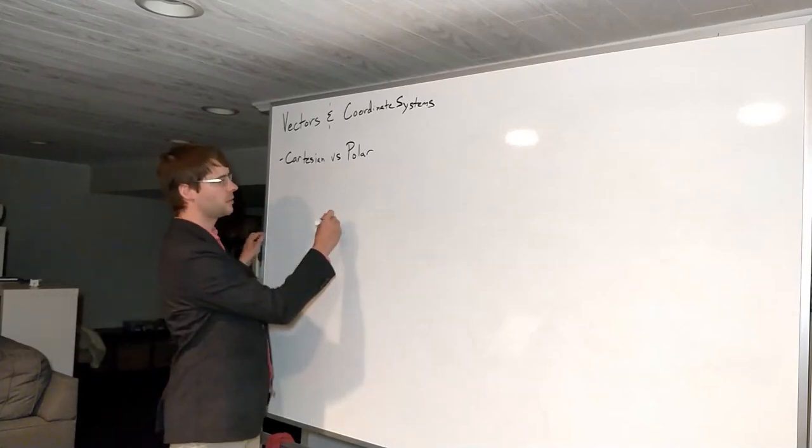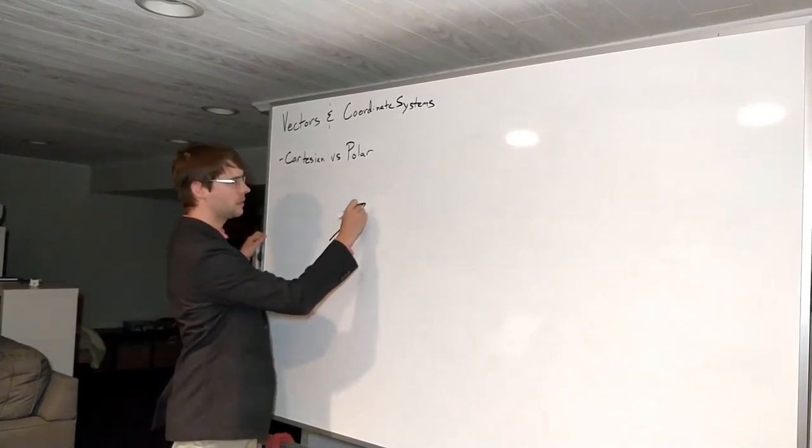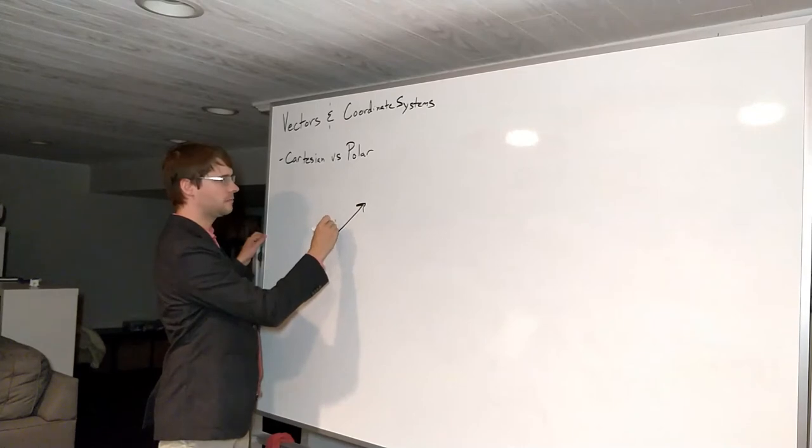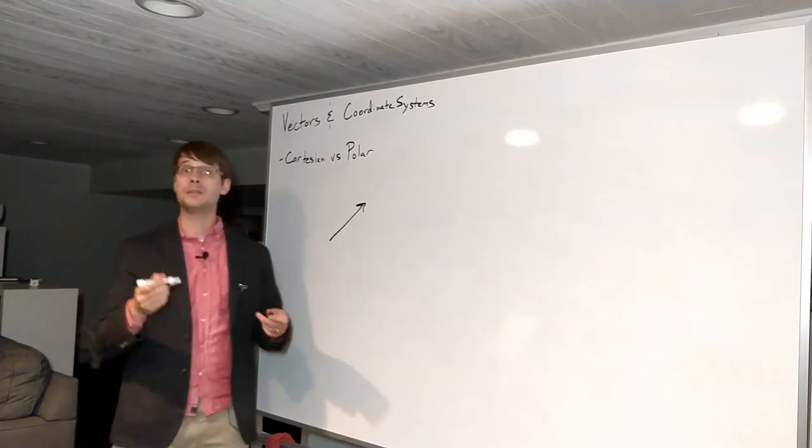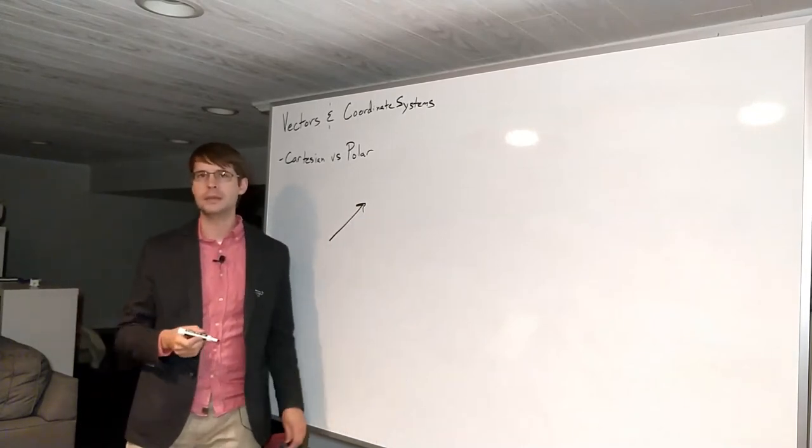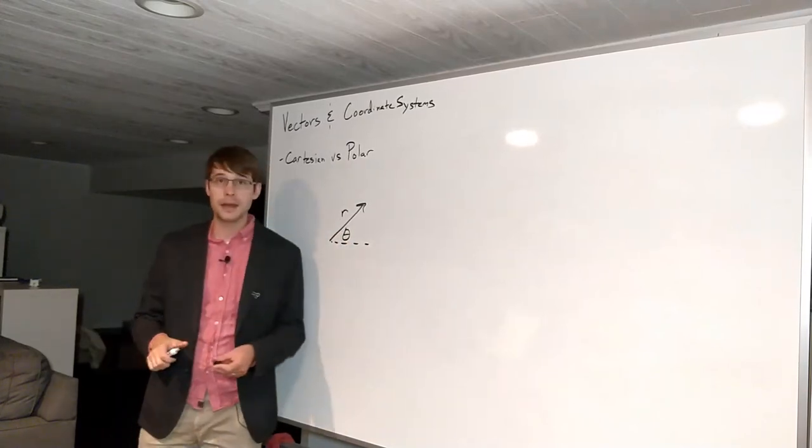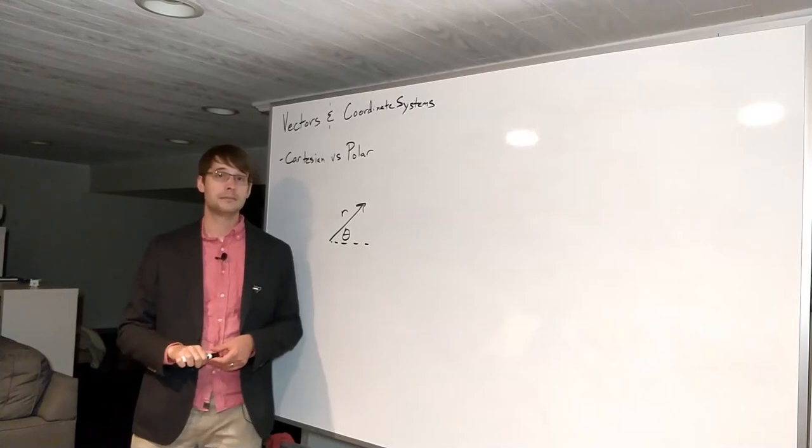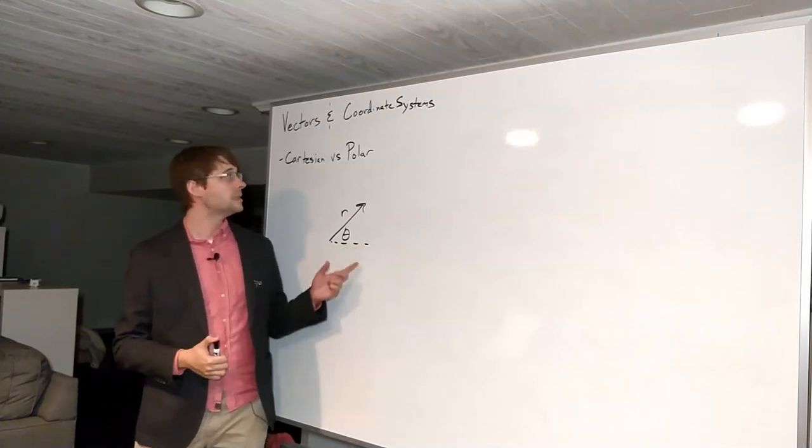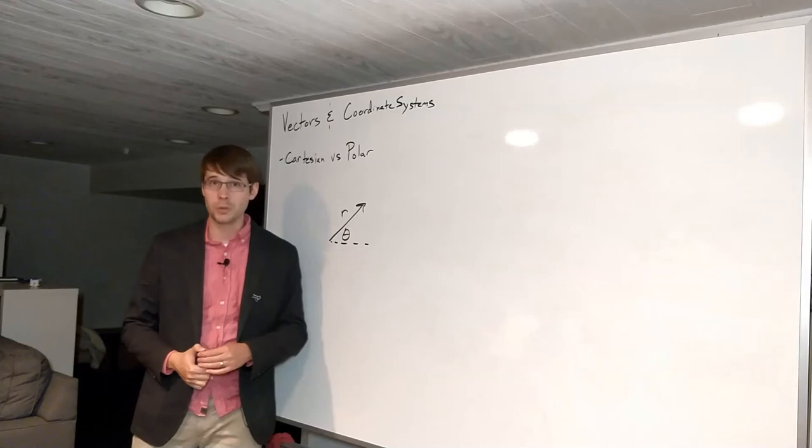Typically when we talk about a vector we'll have some sort of arrow like this. It'll have a length and which would be the magnitude and a direction which is going to be the angle. And if you think about it that way really the typical way we talk about vectors is by using polar coordinates.